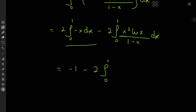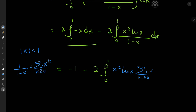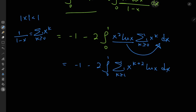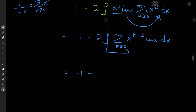We could make use of a geometric series expansion, because we see that x lies between 0 and 1. So if the absolute value of x is less than 1, then we can expand 1 over (1 minus x) as a geometric series — that is, the sum over the non-negative integers k of x to the k. So that's exactly what we're going to do: x squared times log x, and the reciprocal of (1 minus x) turns into this infinite series. We have negative 1 minus 2 times the integral from 0 to 1, and because the x squared and log x terms are independent of the index variable k, we can take them inside the summation operator, giving x to the k plus 2 times log x dx. Now we switch up the order of the integration and summation operators, giving negative 1 minus 2 times the sum over k of the integrals from 0 to 1 of x to the k plus 2 times log x dx.